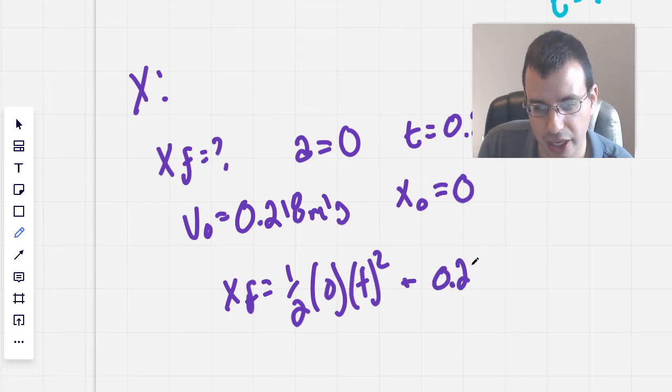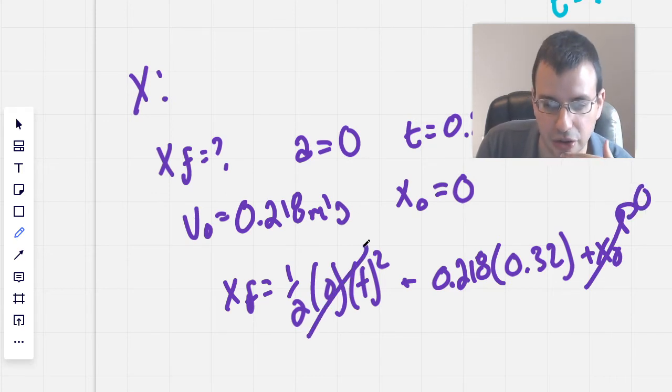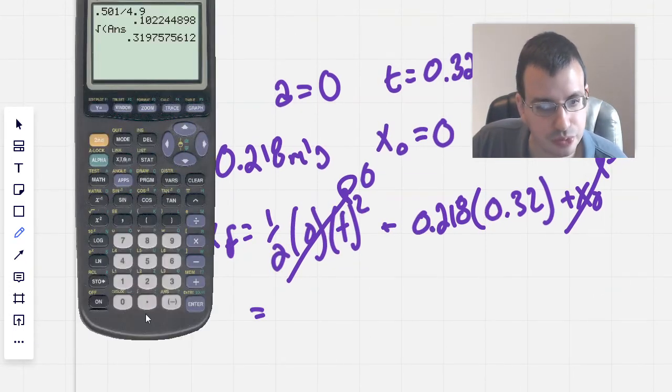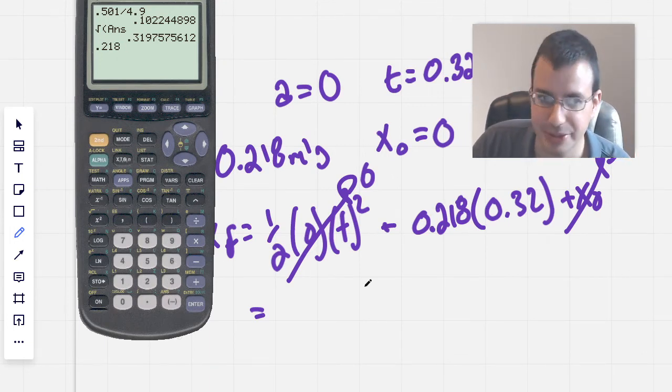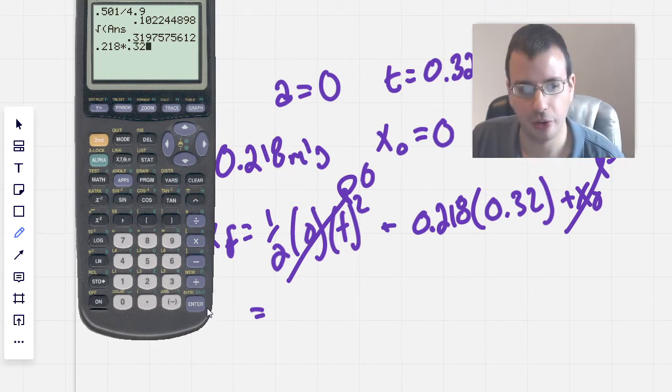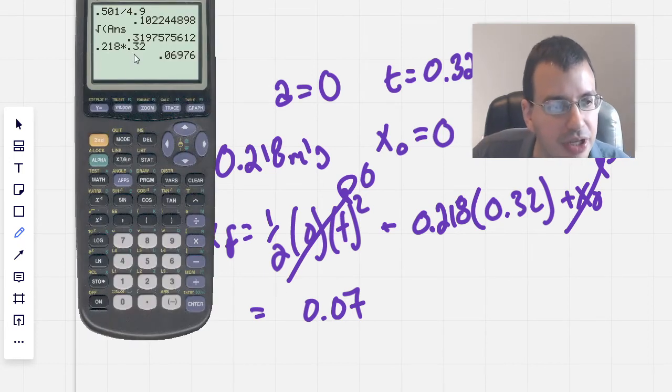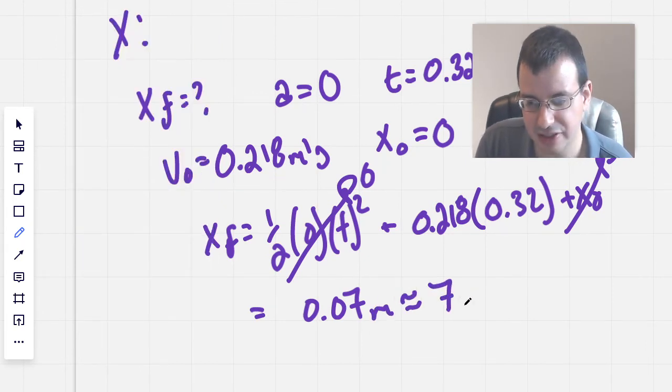I'm just going to write t here because it doesn't matter because it's going to cancel from this 0, plus v naught, which is 0.218, times the time, which is 0.32, plus 0. x initial is 0. There we go. And we're left with 0.218 times 0.32. 0.218. A lot of people just have it memorized that distance equals velocity times time, which just works. But I like to have the formula and just go through the whole thing. Let's see here. We have 0.07. Doesn't seem very far. 0.32 seconds, 0.07 meters, which is about 7 centimeters.